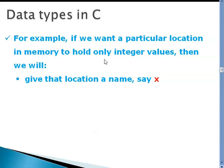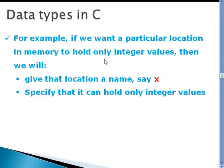One letter x is that identifier. We say that x is the name of that memory location or x is the identifier for that memory location, and then we have to specify that it can hold only integer values.